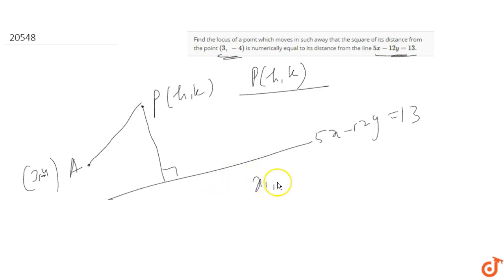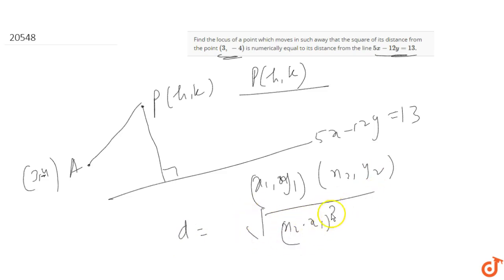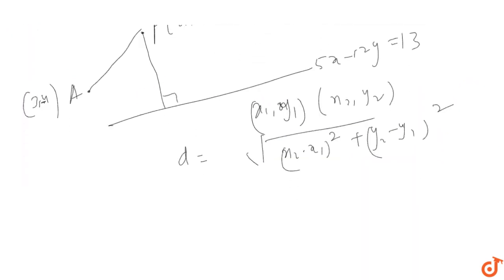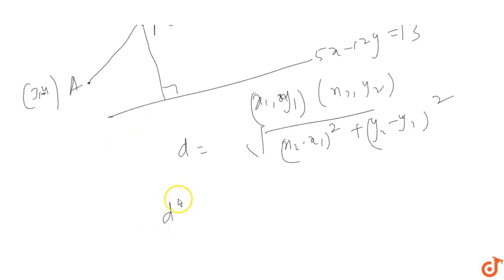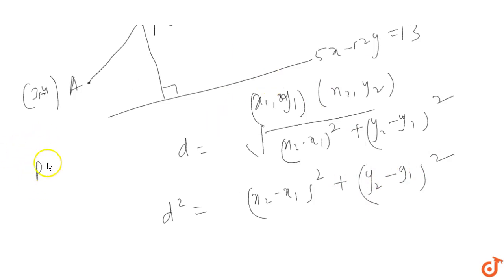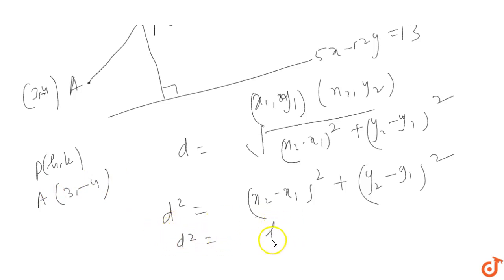According to the distance formula, if we have two points (x1, y1) and (x2, y2), the distance d equals the square root of (x2 minus x1) squared plus (y2 minus y1) squared. Since the question asks for the square of the distance, d squared equals (x2-x1)² + (y2-y1)². With first point (h, k) and second point (3, -4), d squared equals (h-3)² + (k+4)².